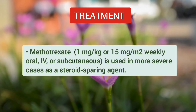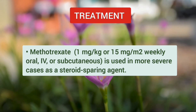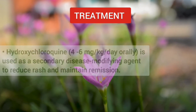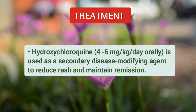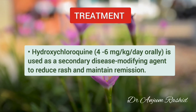Methotrexate — IV, oral, or subcutaneous — in a weekly dose of 1 mg per kg or 15 mg per meter squared is used in more severe cases as a steroid-sparing agent. Hydroxychloroquine in a dose of 4 to 6 mg per kg per day is used as a secondary disease-modifying agent to reduce the rash and maintain remission.